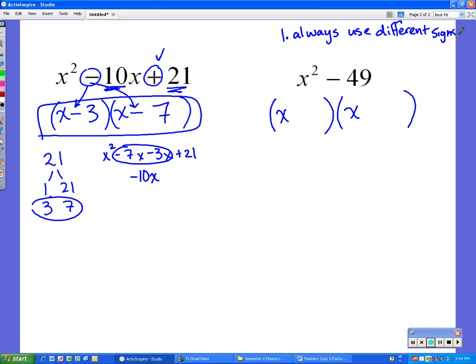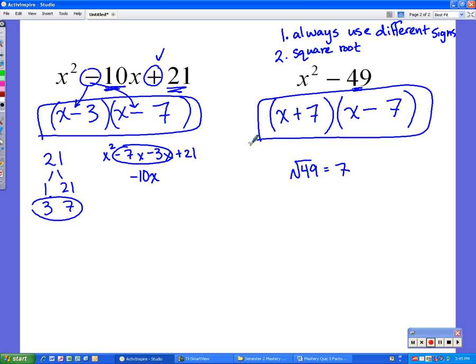That means that you're always going to use 1 plus and 1 minus. They'll never be both plus or both minus, always different. So you can put those in right away. And then the second rule is to find the numbers that go in there, you need to square root the last number. So in this case, we have 49. Well, the square root of 49 is equal to 7. So I put a 7 in both of these. And the answer for this one is x plus 7 times x minus 7. And that is how you factor polynomials.